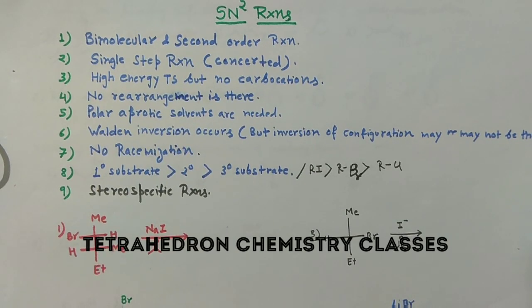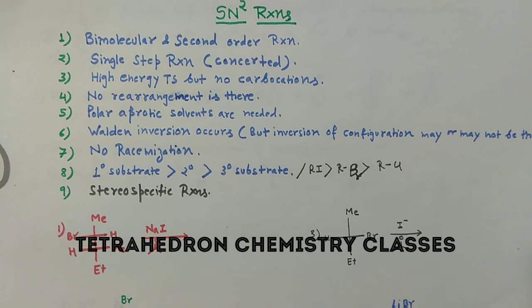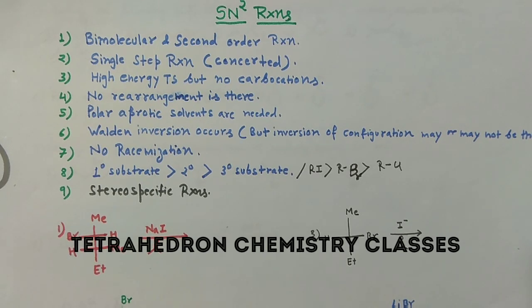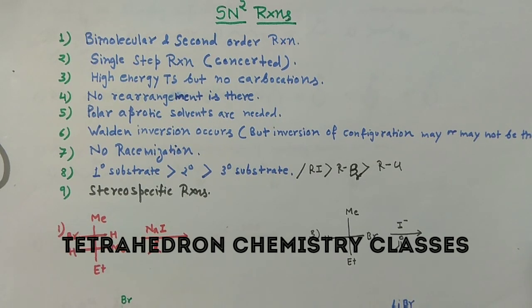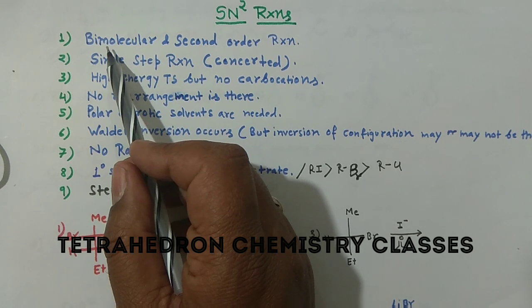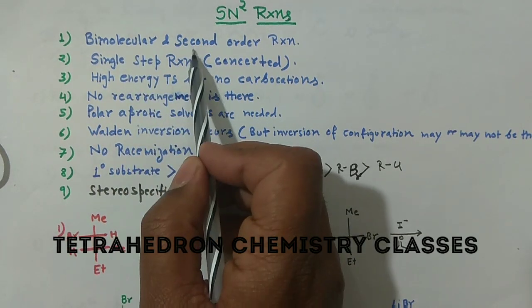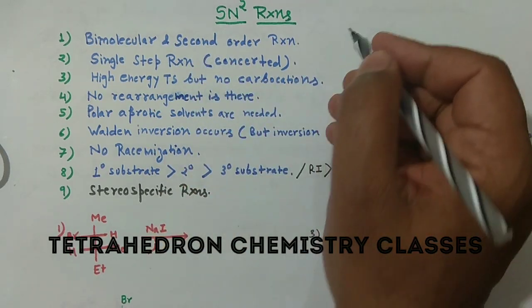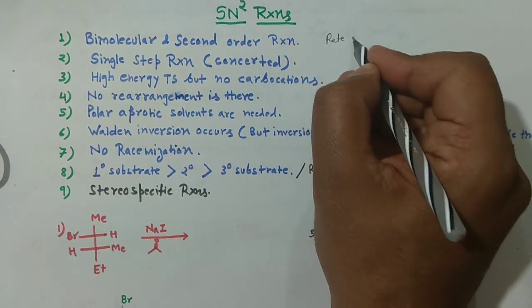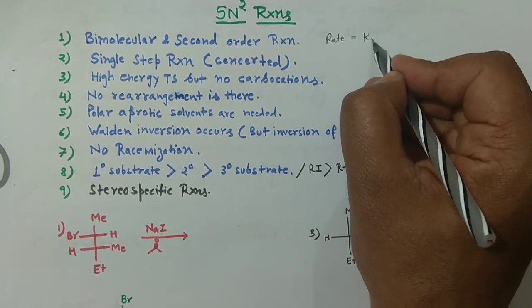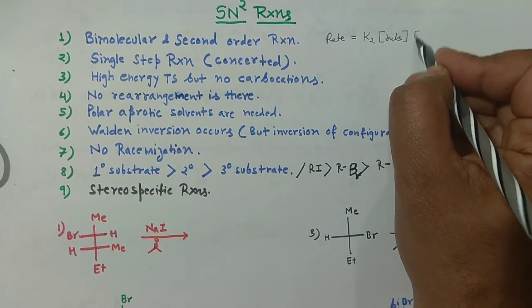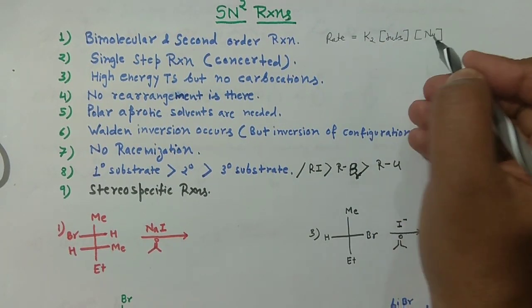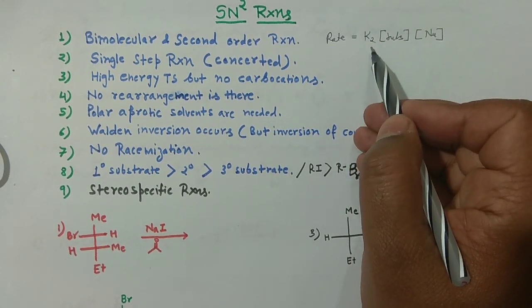Welcome back to the Tetrahedron Chemistry Classes. Today I'm going to cover SN2 reactions, that is nucleophilic substitution of second order. We'll quickly see the features of SN2. First, the reaction is bimolecular and second order — the rate of reaction is directly proportional to both the substrate concentration and the nucleophile concentration. I've written k2 because it denotes the second order rate constant.